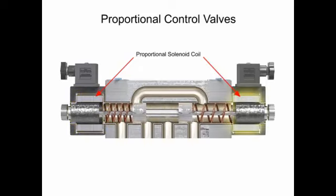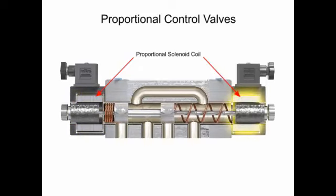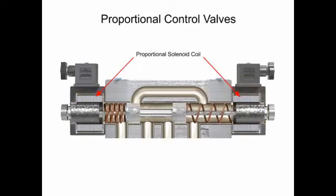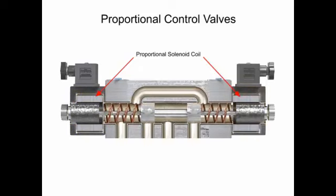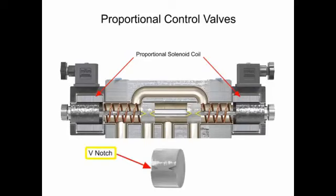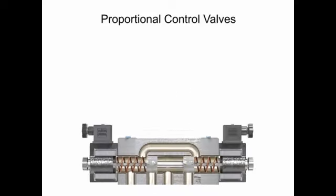As the internal valve spool changes position, new flow areas open up gradually and continue to open wider during full spool travel. To eliminate flow lag from spool overlap, most manufacturers cut V-notches that allow some flow to pass as soon as the spool moves.